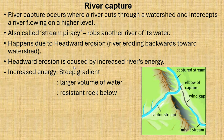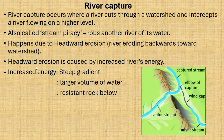Number one cause is the steep gradient — if your river flows through a steeper gradient, it will mostly increase the energy or the speed of flow. Number two is the large volume of water; as your river receives more water, the energy increases. And lastly, we also talk about the resistant rock below — if your river is flowing on a resistant rock, it tends to be more energetic.